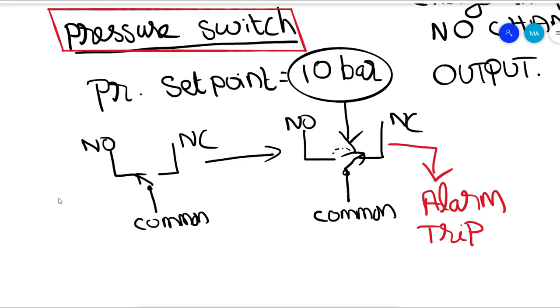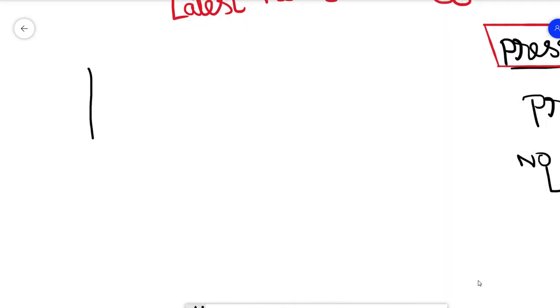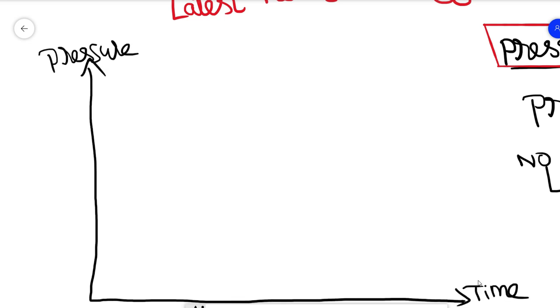Okay, where does this deadband come into the picture? Yeah, I could understand your question. Let's see this picture. The X axis is time and Y axis is pressure. We have a set pressure of 10 bar in the Y axis. So when the process pressure gradually increases, it reaches the 10 bar pressure.